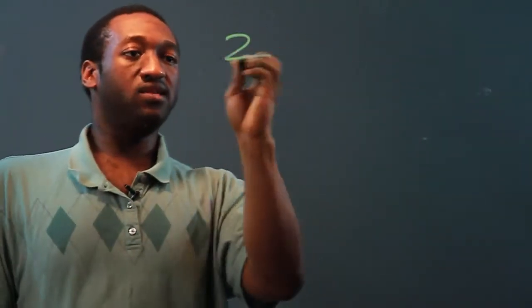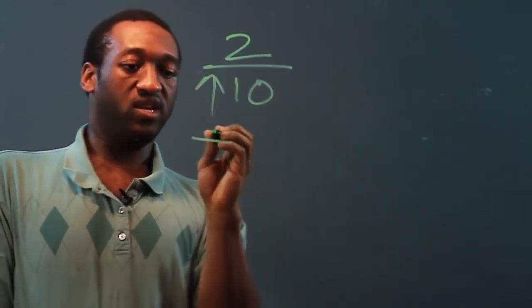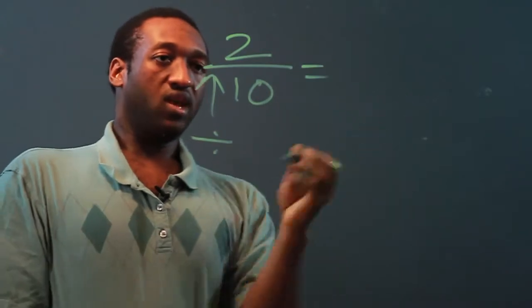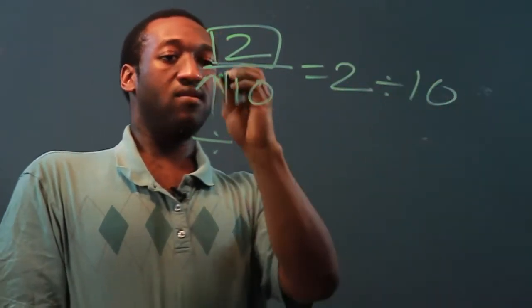So if we have two-tenths, that's 2 over 10. Once again, our fraction is a division sign, and this is the same thing as taking 2 and dividing it by 10, the denominator.